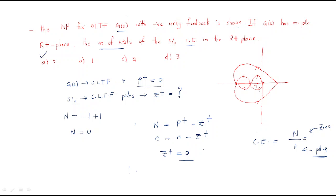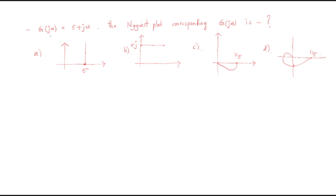The answer is zero. This is an important problem type. Sometimes the question is asked directly — find the number of right-hand-side closed-loop poles — and sometimes it is asked indirectly as: find the number of roots of the system's characteristic equation in the RHP. Both mean the same thing.